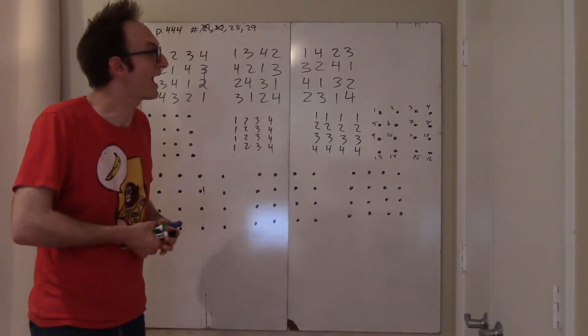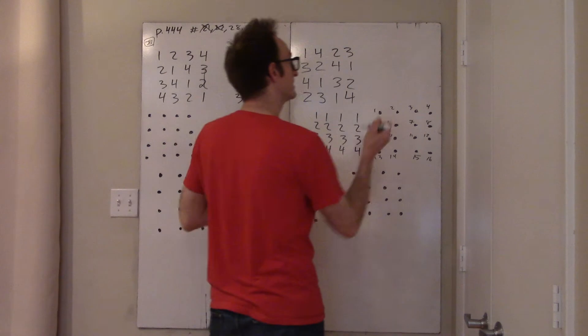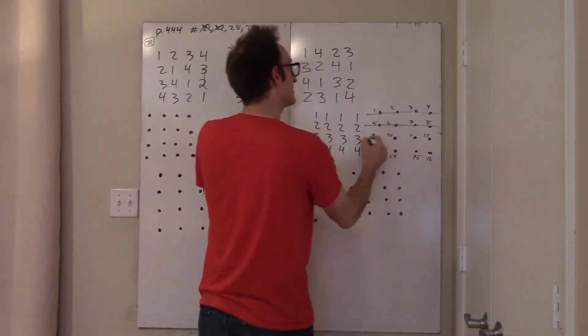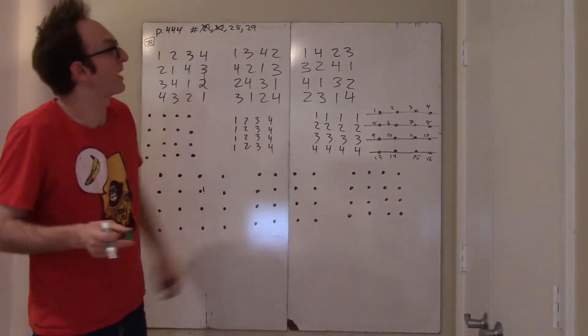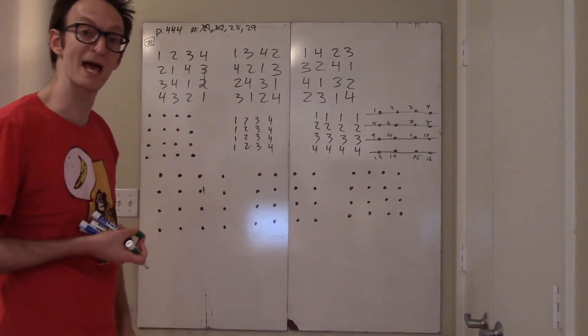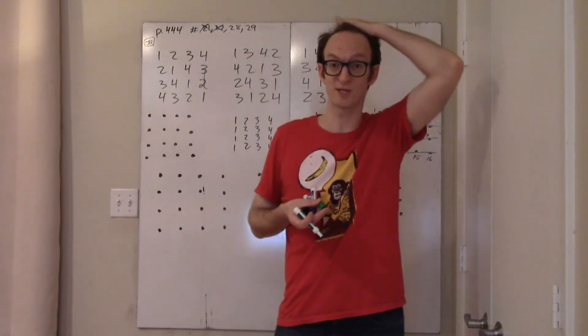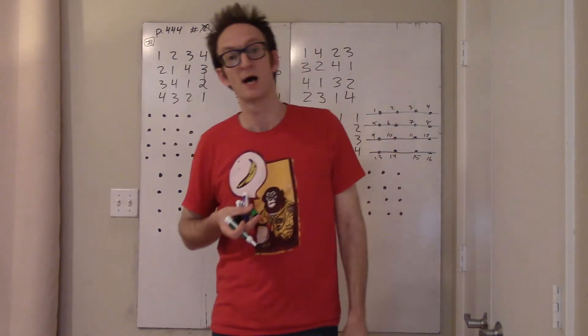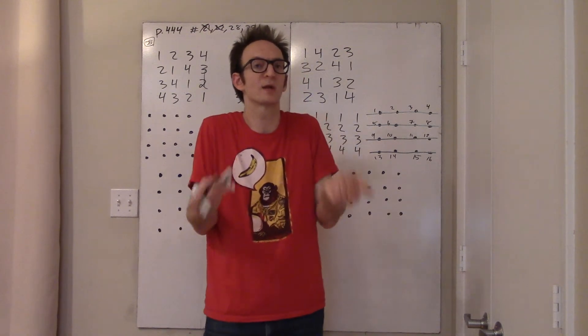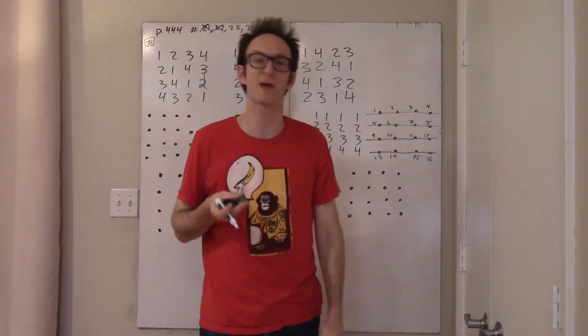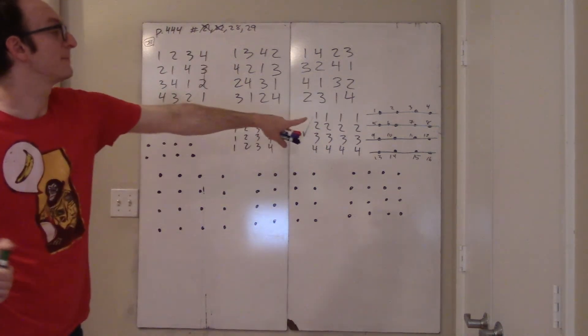These ones are telling me basically define a line to be the set of points that all share the same number. So one one one one means I have a line of ones. Two two two two means I have a line of twos. Three three three means I have a line of threes, and here I have a line of fours. And so this square which enforces the row property of any Latin square sort of gives me immediately the common sense set of equivalence classes of parallel lines.